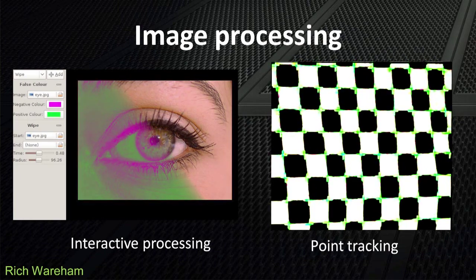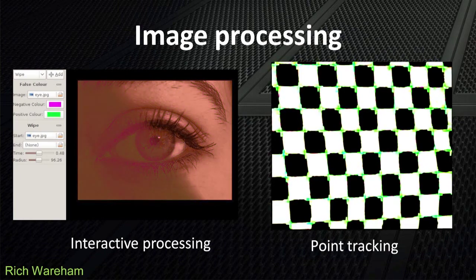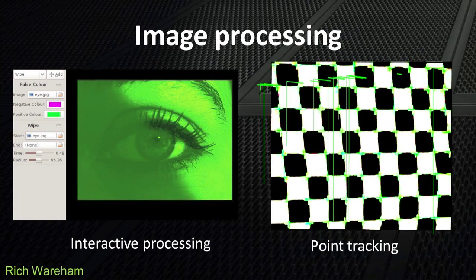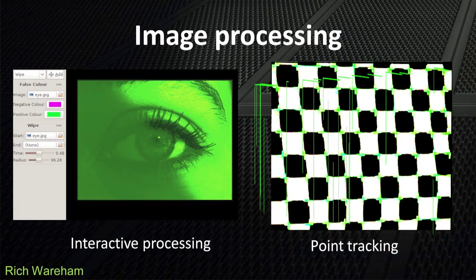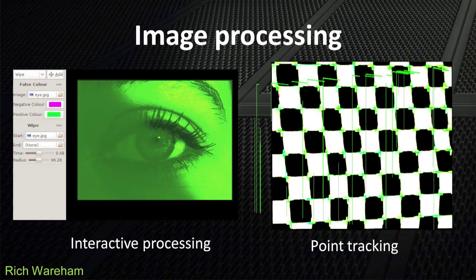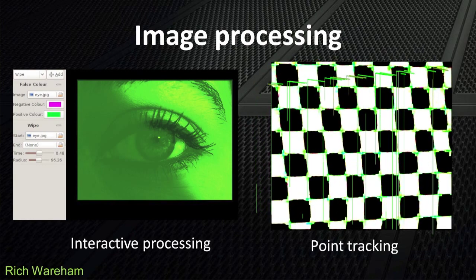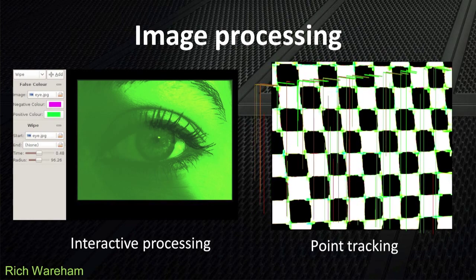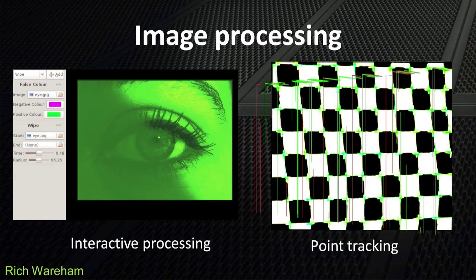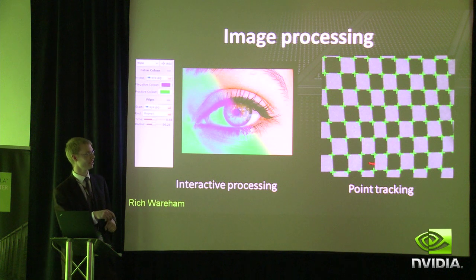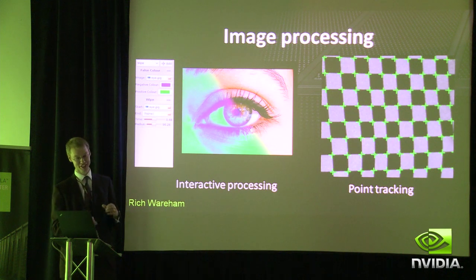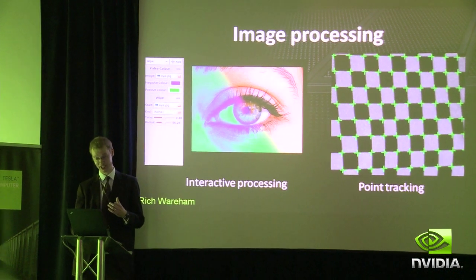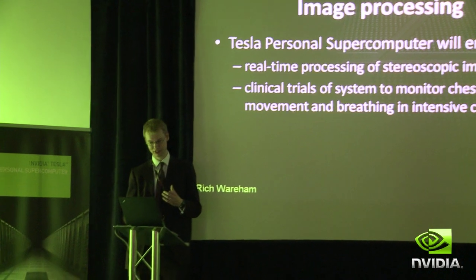In this case, there are two image processes going on: one's a false color, and one's a white. This is particularly interesting — although it doesn't look so interesting on this slide — but this is finding point tracking, and it has a very interesting medical application.